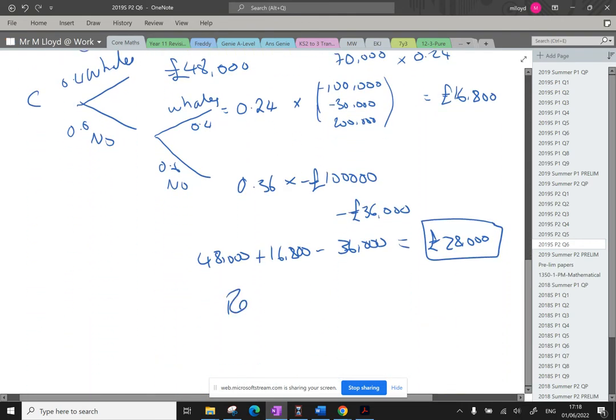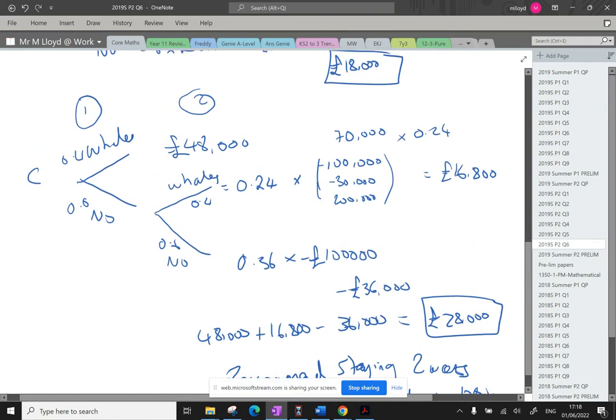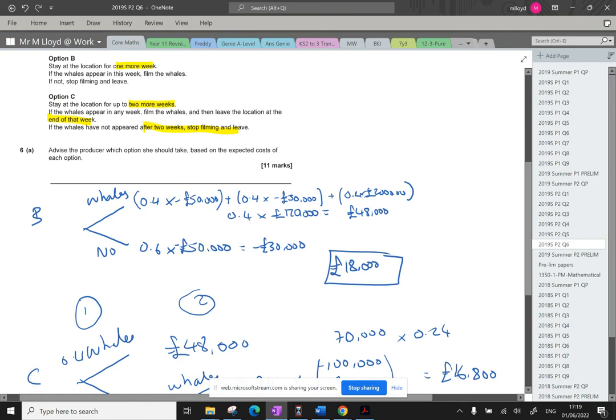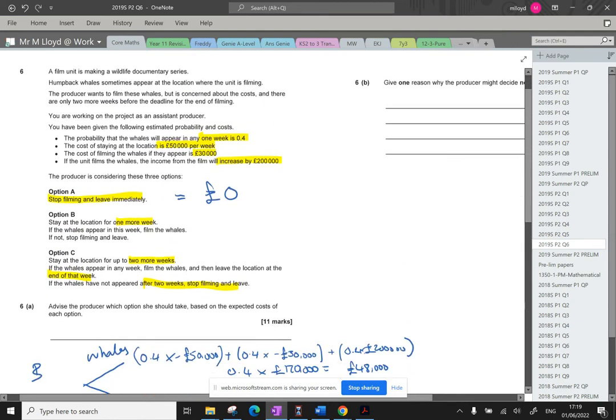So I'd recommend staying two weeks as the expected value is £28,000. I like to say that £28,000, big lump of money. I'd love for a mathematician to go through this, work out what the probability has to be of the whales showing up to make option B the best or to make option A the best. What probability will lead to the least amount of money?